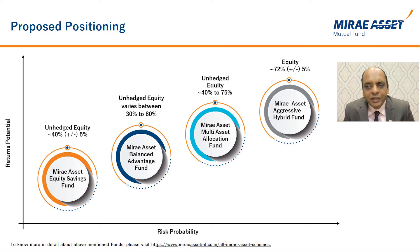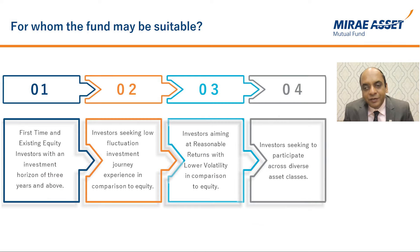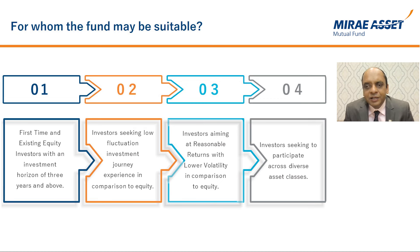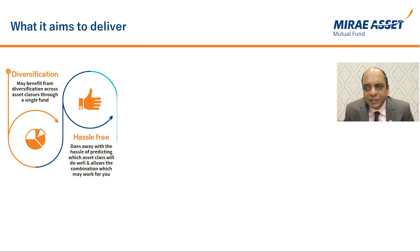Since the fund will invest a minimum of 65% in equity and equity-related instruments, it will qualify for equity taxation. Any rebalancing within the fund will not entail any tax implications for the fund or the investor. On a risk-return profile scale, the fund is positioned between Mirai Asset Balanced Advantage Fund and Mirai Asset Aggressive Hybrid Fund. The fund may be suitable for first-time investors or existing equity investors with a time horizon of three years and above, and for investors seeking lower volatility than equities with reasonable return expectations, or those seeking to participate across diverse asset classes.